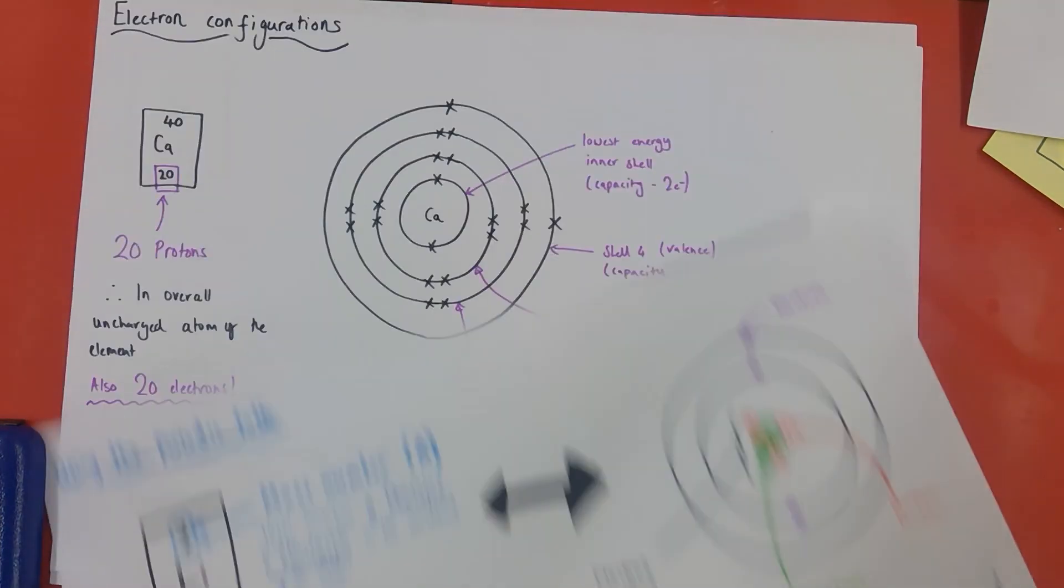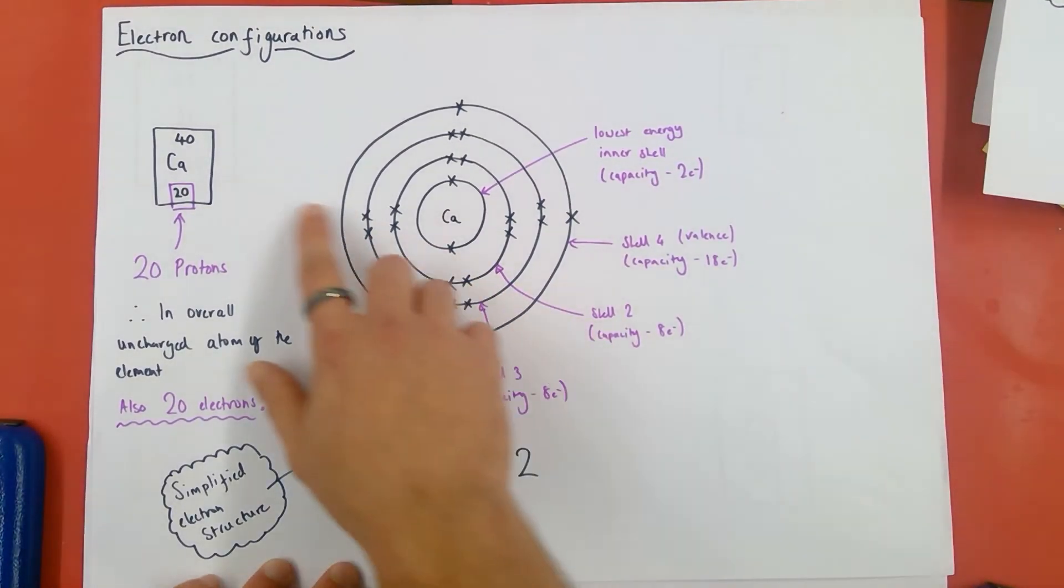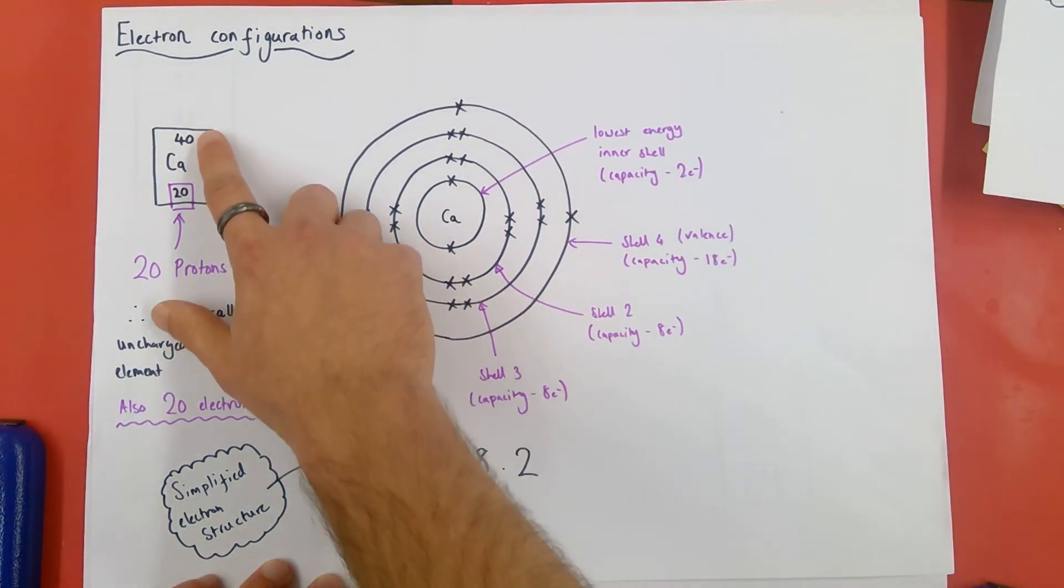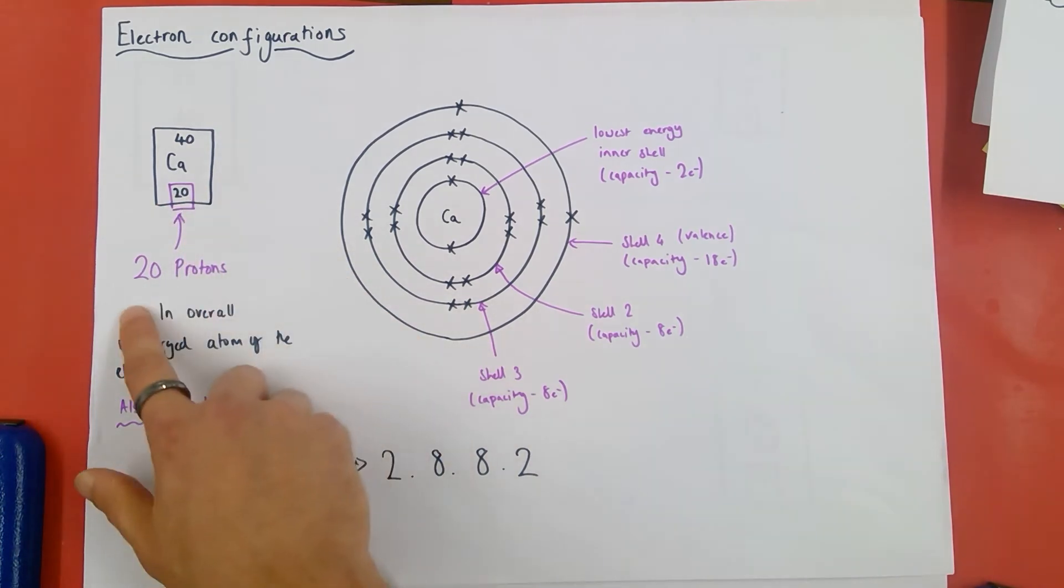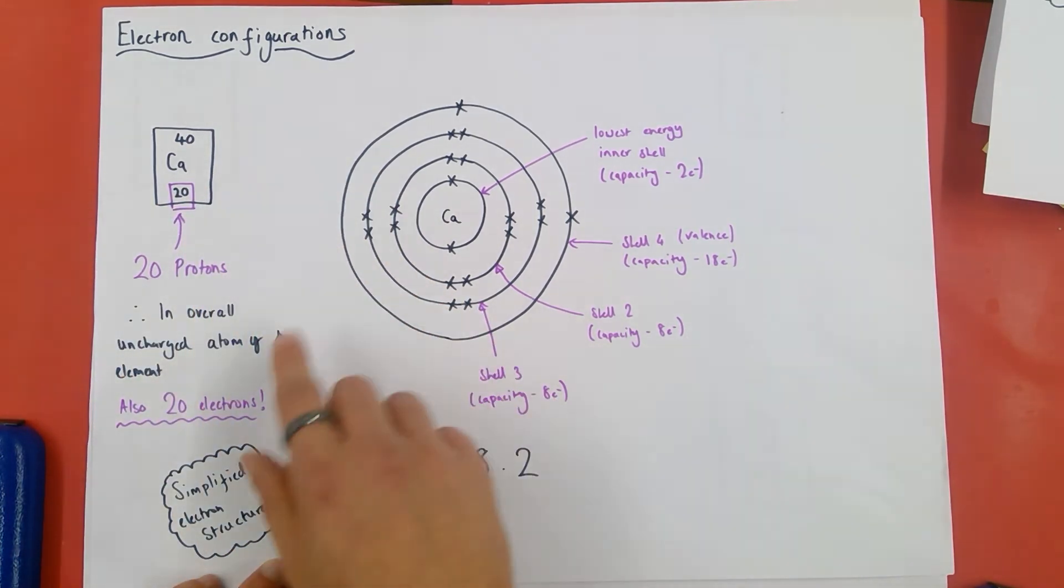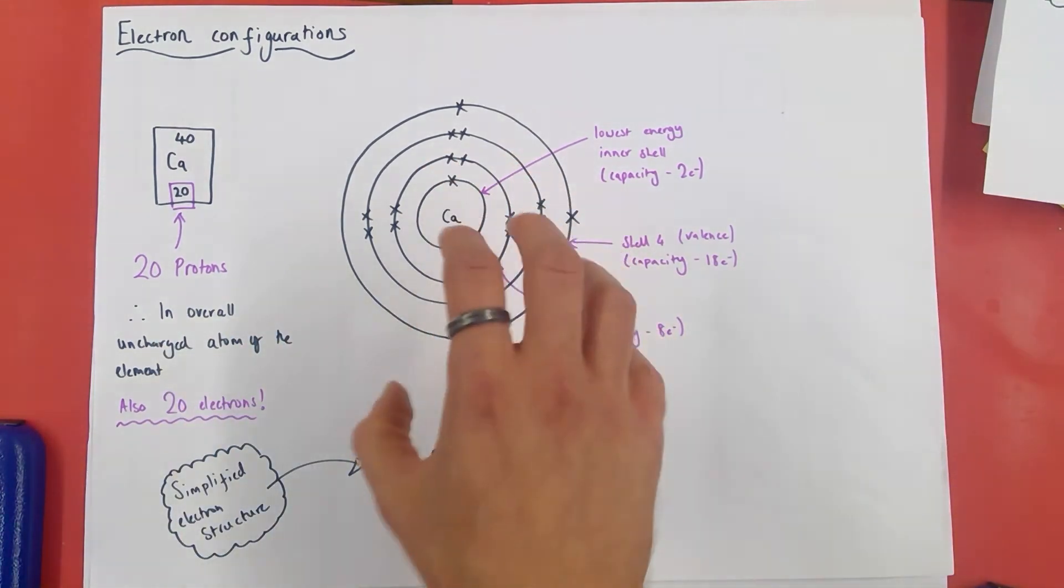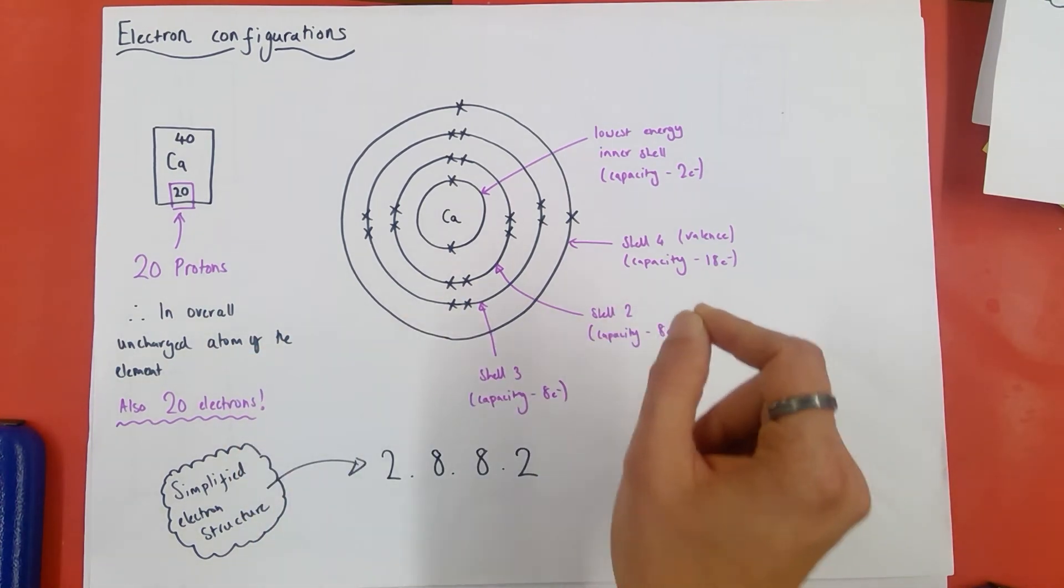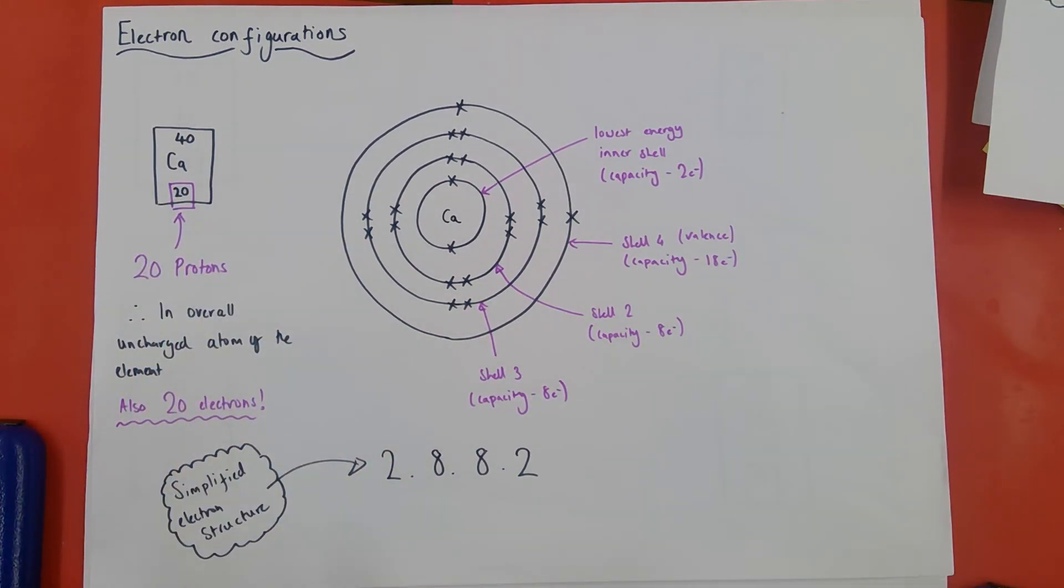This brings us finally on to electron configurations. So here is an atom of calcium. And again, I've drawn the symbol of calcium 40, 20. I now know the atomic number stands for the number of protons, so I know I have 20 protons. I also know that if this is an atom of elements, and I know that atoms of elements are uncharged, I must have equal numbers of protons and electrons, so I also must have 20 electrons around my calcium nucleus, so I now know how many electrons I have to utilize.